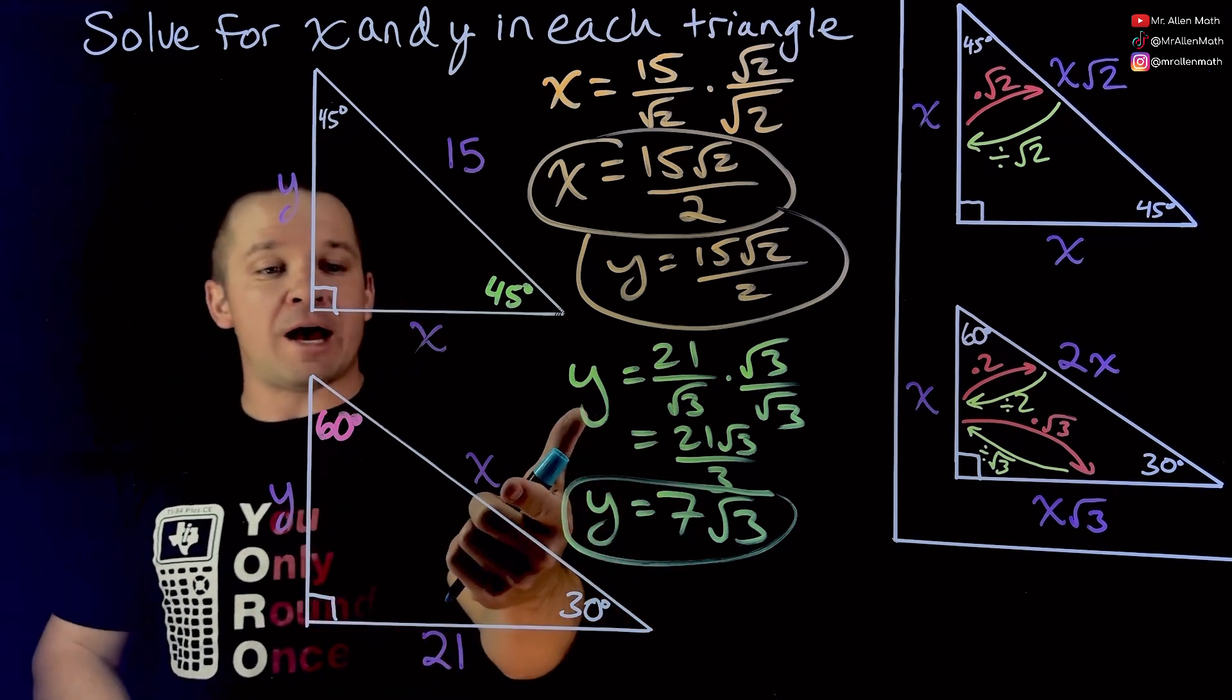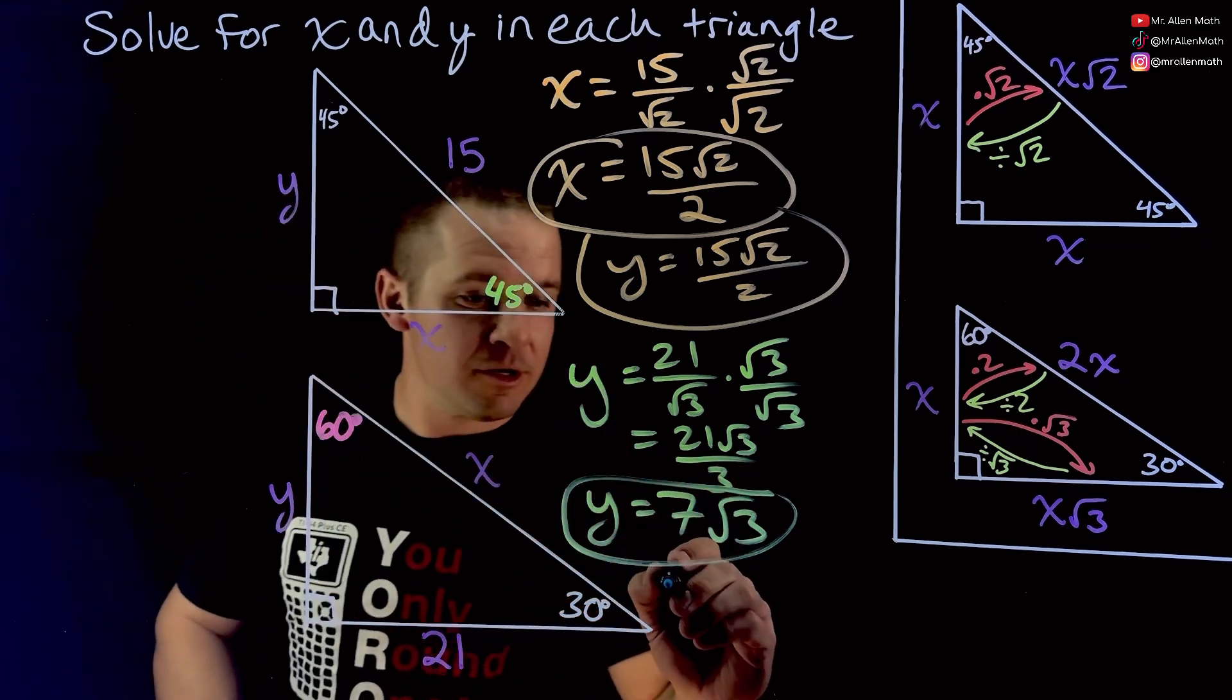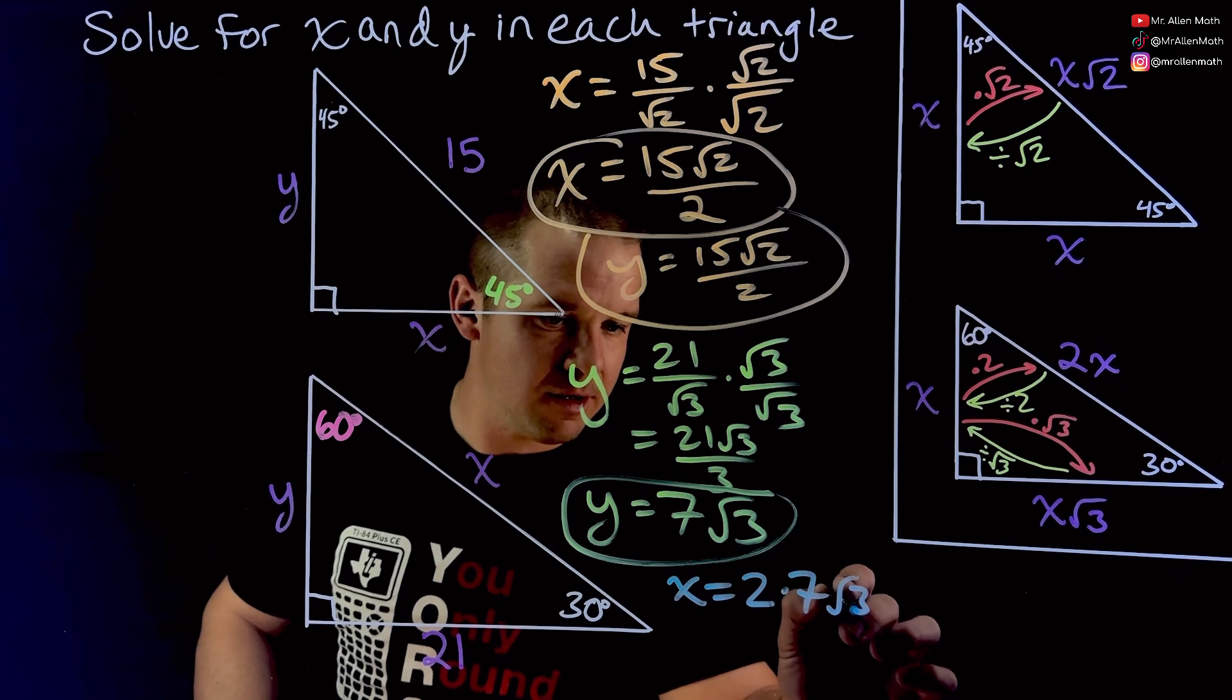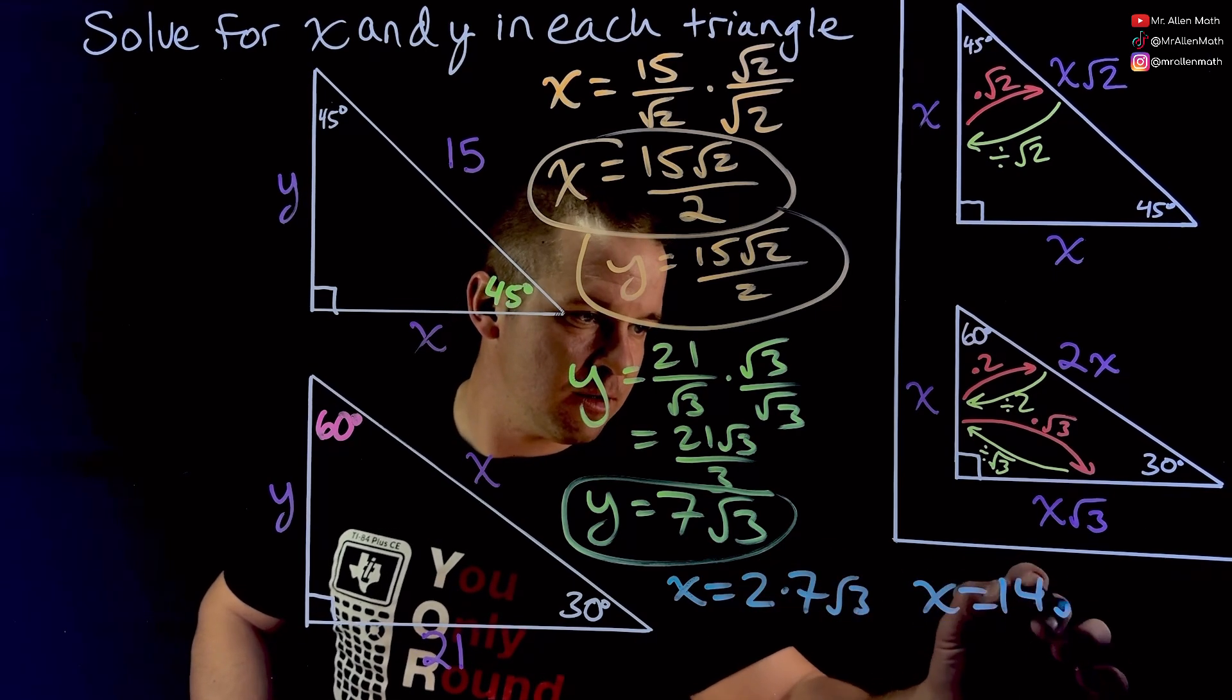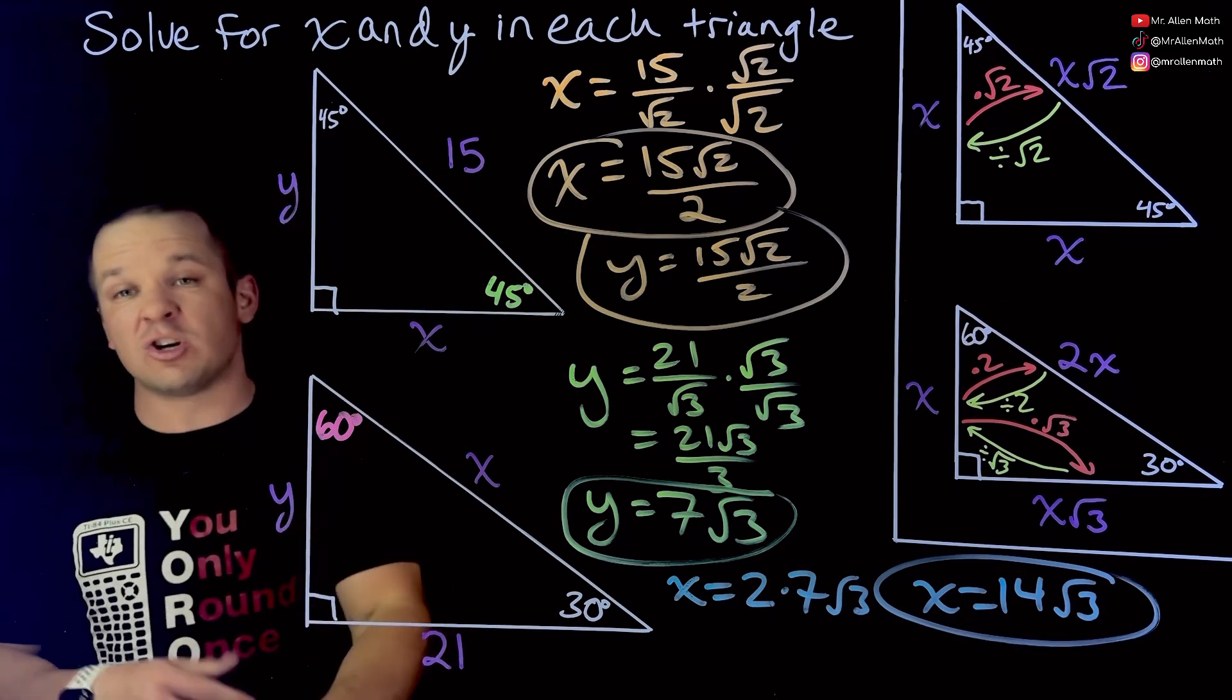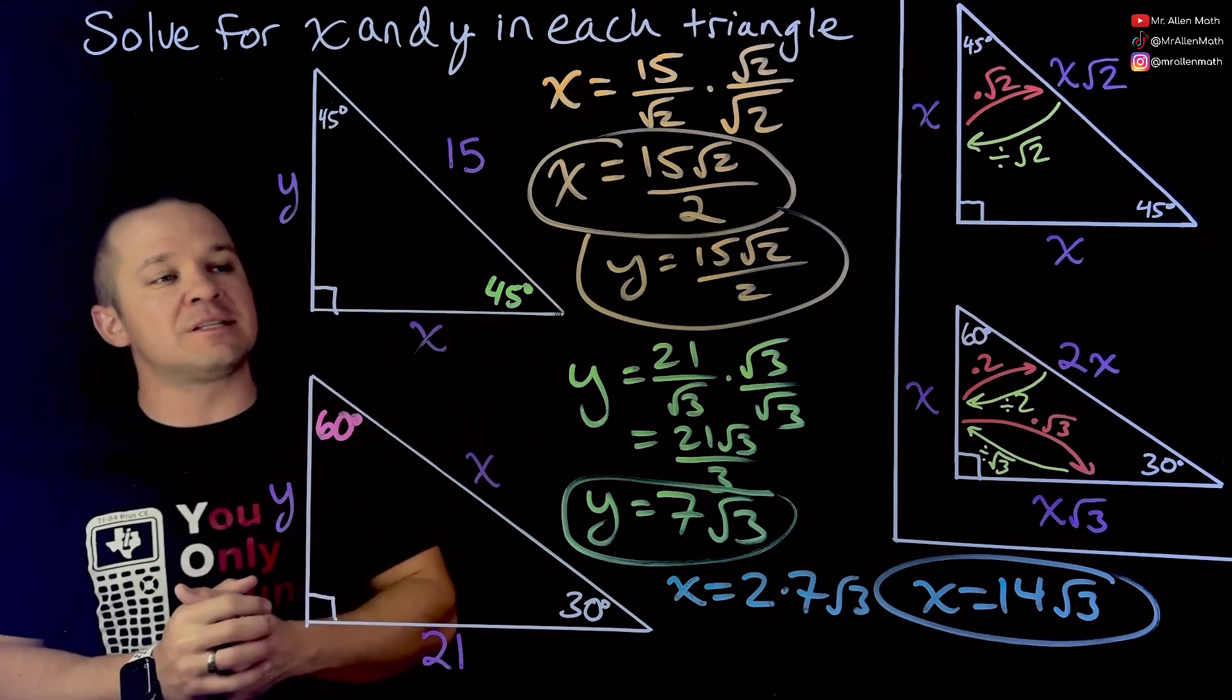Last thing here, I've got to get x. Well, x is my short side times 2. So let's write that out. x equals 2 times the short side, 7 root 3. So x equals, what is that? 2 times 2 is 14 square root 3. Boom. I have solved for x and y or solved the special right triangle. Whatever it means. Whatever they ask you there. Find the missing sides.